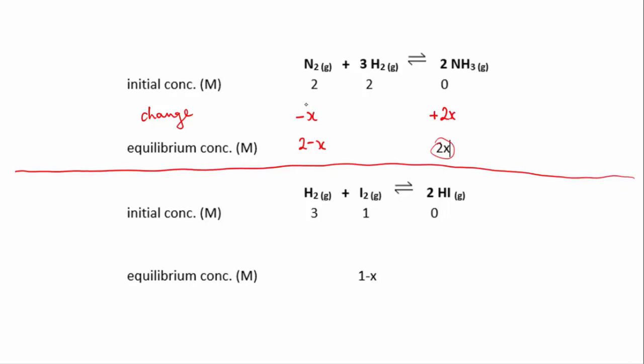So we know that x amount of nitrogen was used and we know that three times as much hydrogen must have been used. So three times x is 3x, so we have used 3x worth of hydrogen. Notice this is because nitrogen to hydrogen in the reaction is a one to three ratio, so if you use one mole of nitrogen you must use three moles of hydrogen. Down here we used x moles of nitrogen so we must have used 3x moles, or moles per liter rather, of hydrogen. So we started with two moles of hydrogen initially, we used 3x, so our equilibrium concentration is 2 minus 3x.